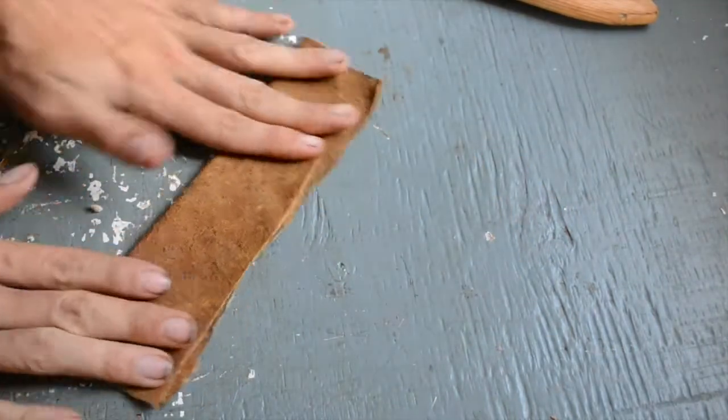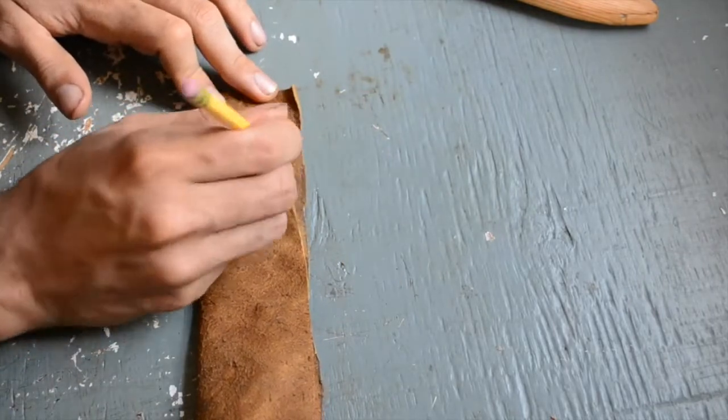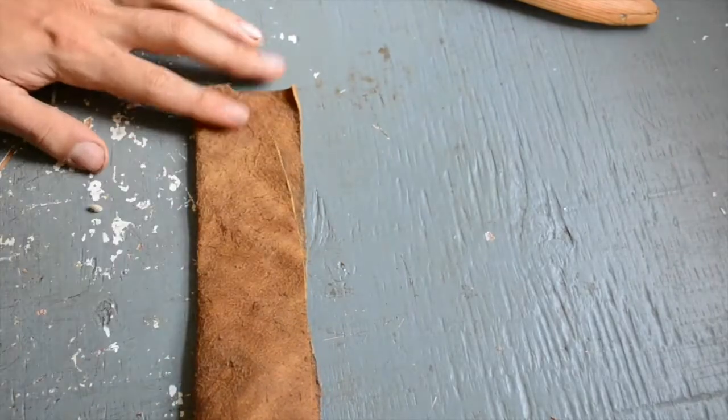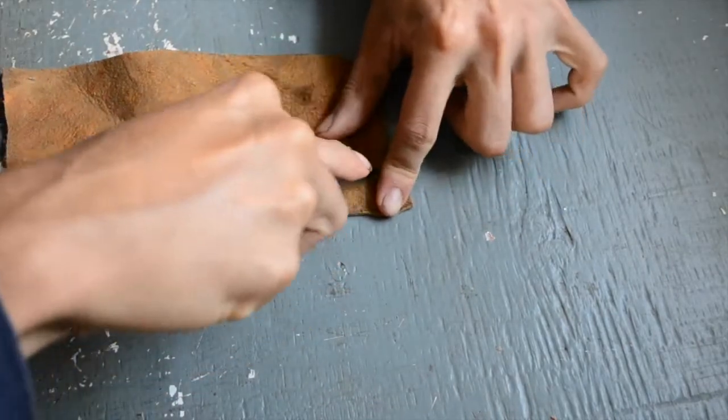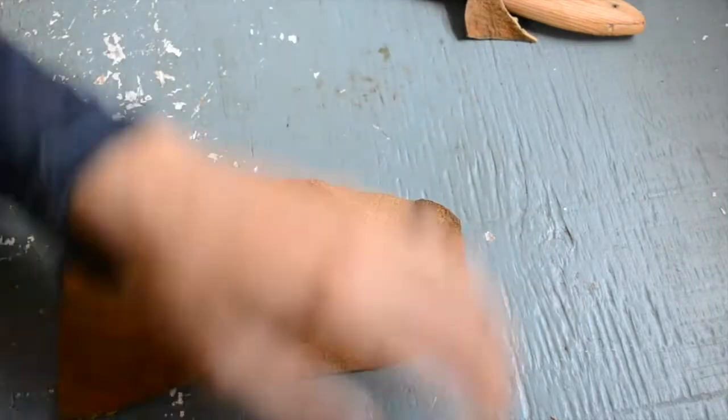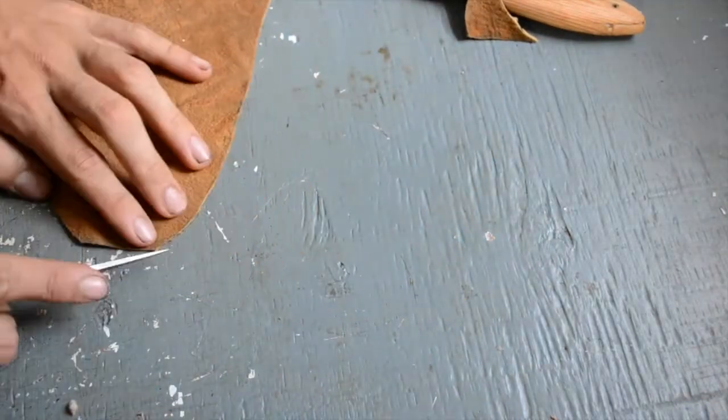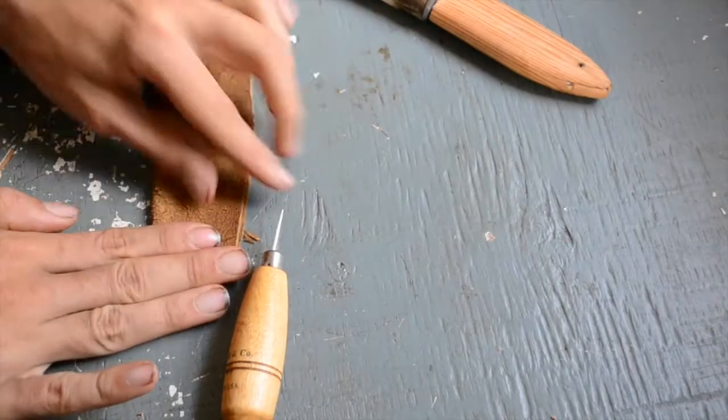Double check that everything still fits. Then I fold over the edge and trace it so that both edges of the leather are symmetrical. A few little cuts to make sure that everything is properly round, and now I'm ready to begin punching holes.